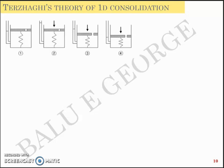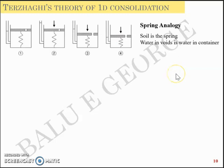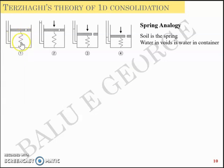You can see four figures here — one, two, three, and four. This set of figures corresponds to what we call the spring analogy, in which Terzaghi assumed the soil to be the spring and the water in the voids as the water in this container. So the analogy is: soil is analogous to the spring.